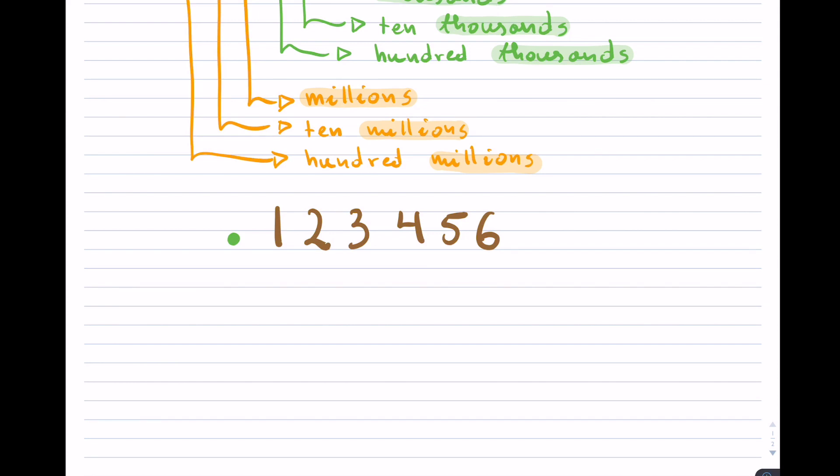So the place values behind the decimal, here, they start off. We have this one right here. Maybe I'll do it in the opposite direction. The first place value, because we are dealing with powers of tens, this place value is known as the tenths. And notice the th.